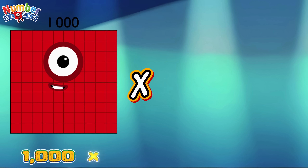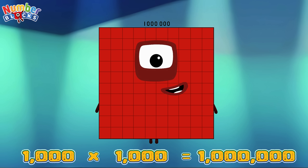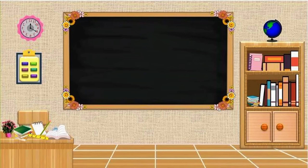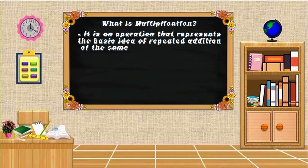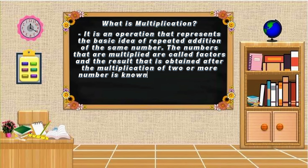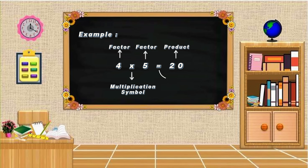The numbers that are multiplied are called factors, and the result obtained after the multiplication of two or more numbers is known as the product of those numbers. Here is an example: 4 multiplied by 5 is equals to 20, wherein 4 is the factor and 5 is the other factor, and 20 is the product. Here is the multiplication symbol and here is the equal sign.